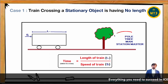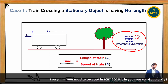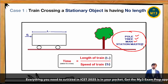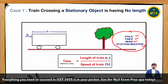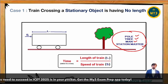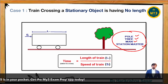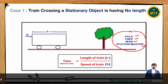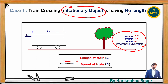Instead of a pole, they may mention: train crossing a tree, train crossing a man, or train crossing a station master who is on the platform. All these terms are not going to have any length — it is a negligible length, so we don't consider the length of that object. That is why this case is called train crossing a stationary object with no length.